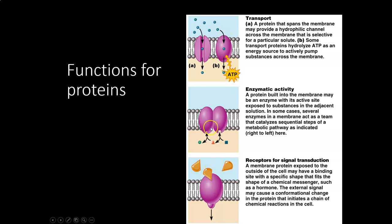Some proteins serve as enzymes — they catalyze chemical reactions. Some are receptors. Signal transduction means the relay of a signal from one side of the cell membrane to the other. This is one of the ways hormones work: the hormone binds to the receptor and then makes something happen inside the cell as a result of that binding.